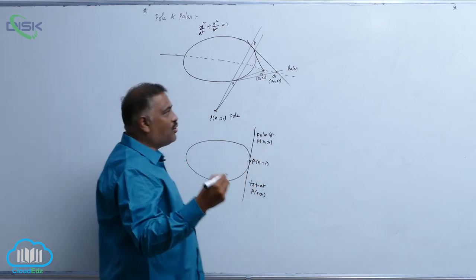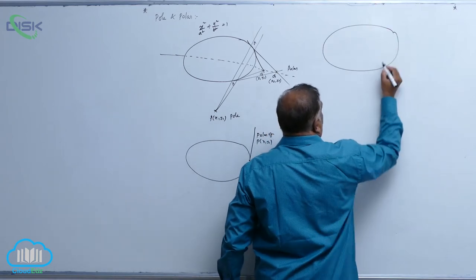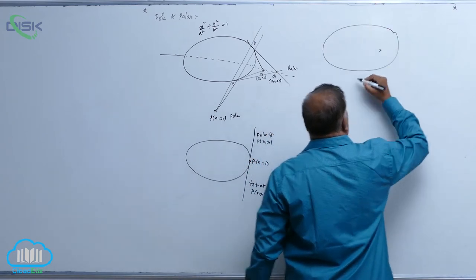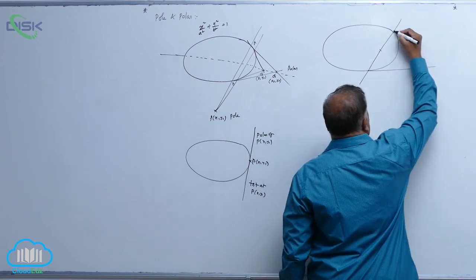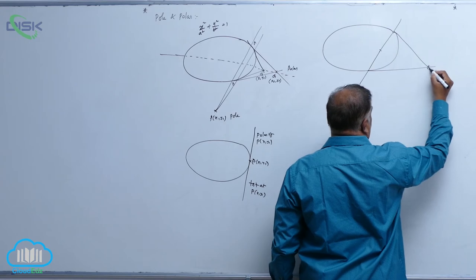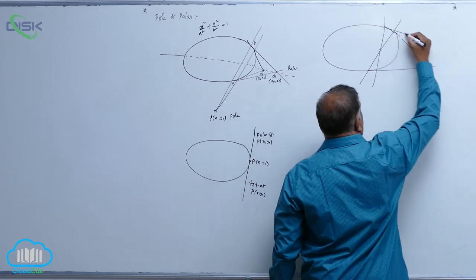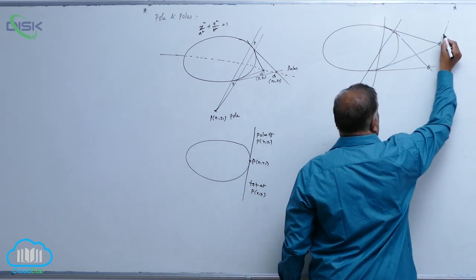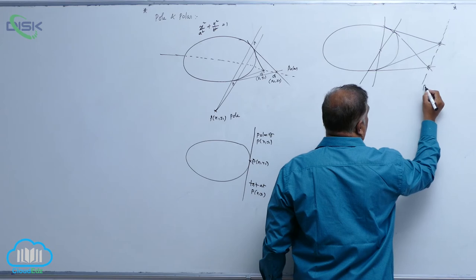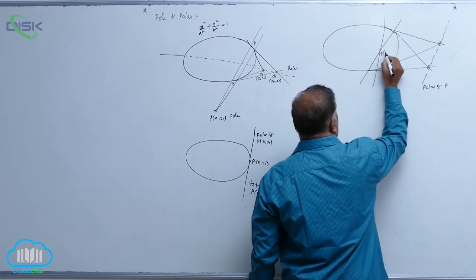Now if you observe the ellipse equation like this and select a point inside, now again you draw a tangent, this is going to be our first point of intersection. One more secant line you can draw, this is one more point of intersection. So line joining of these two is nothing but polar of P. Now this is P(x1, y1).